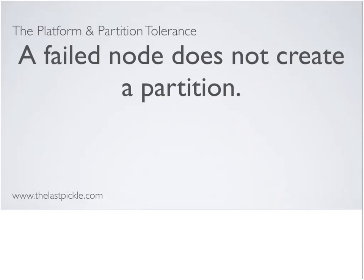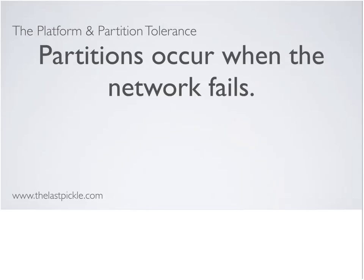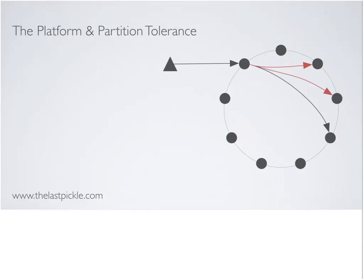Finally, partitions. Partitions don't happen in Cassandra when you restart a node. Partitions refer to nodes that are able to accept requests but not process them — typically due to network errors, networking code issues, or configuration. In this example, our Cassandra daemon accepts a request from the client, wants to send three messages to three nodes to process a write, but only one gets delivered — we've got a partition. Whether or not we can process the request depends on the consistency level: at quorum with RF3 we couldn't; at CL1 we could.